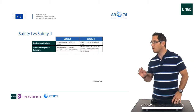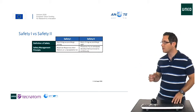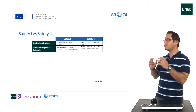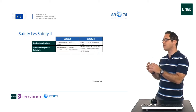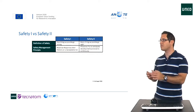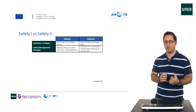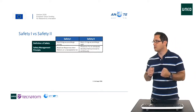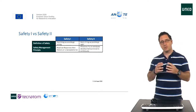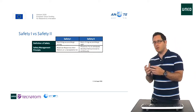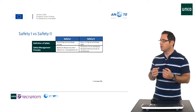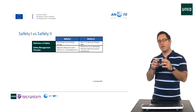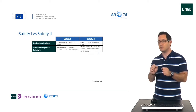Safety II, on the other hand, is proactive. It's always trying to anticipate developments and events continuously. That means that we are going to have everybody involved, and we are going to focus on many frequent everyday activities.